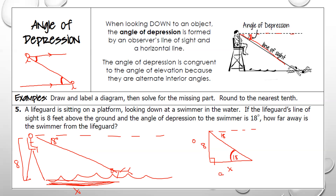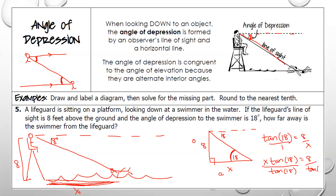Opposite and adjacent — we use tangent. The tangent of 18 equals 8 over x. I put a one in the denominator and cross multiply: x · tan(18) = 8. To get x by itself I divide both sides by tangent of 18, and those cancel, leaving just x. In the calculator I type 8 divided by tangent 18, and I get 24.6 feet.